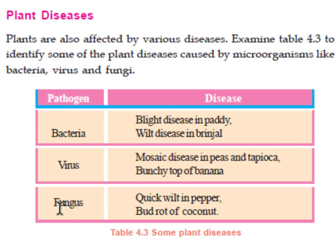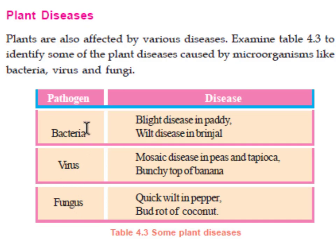The next pathogen is fungus. Bud rot of coconut is a disease caused by fungus. These three pathogens — bacteria, virus, and fungus — are responsible for various plant diseases.